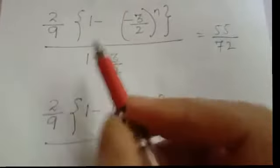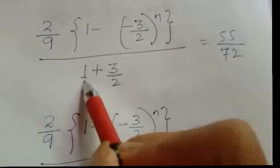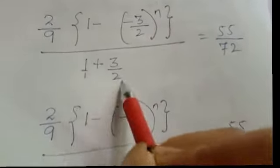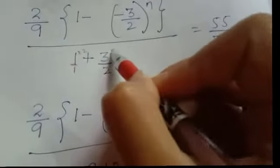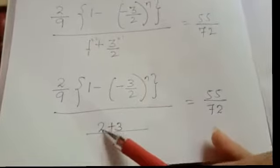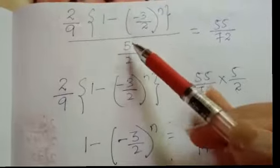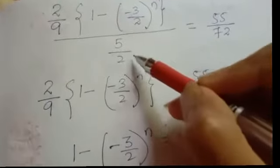We take LCM of 1 and 2, which is 2. So 1 times 2 are 2, 2 ones are 2. In the denominator we get 2 plus 3 by 2, that is 5 by 2. Now we will do cross multiplication.